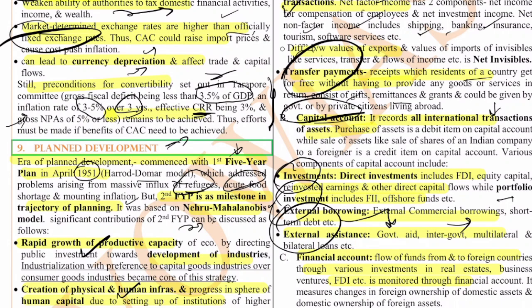The third component is the financial account, which is the flow of funds to and from foreign countries through investments in real estate, business, FDI, etc. It measures the change in foreign ownership of domestic assets and domestic ownership of foreign assets. Sometimes the financial account is included within the capital account — you can show it separately or within capital account; either will be sufficient. Always write all components with examples, and include current data such as India's current account deficit and areas where India faces a huge deficit, as current issues earn extra marks.